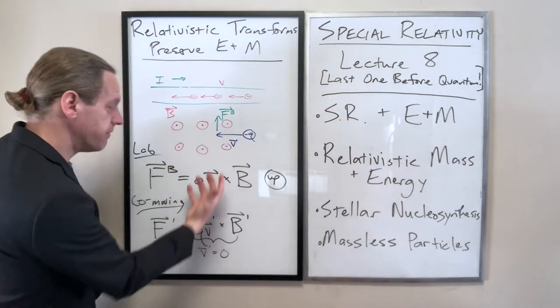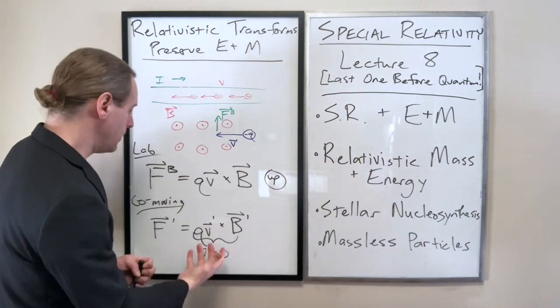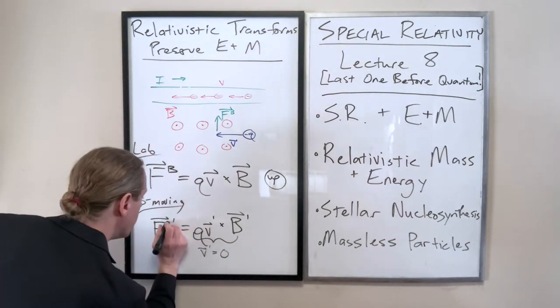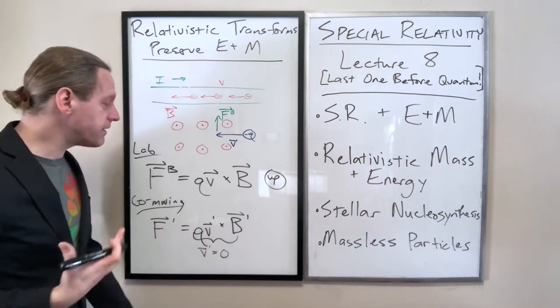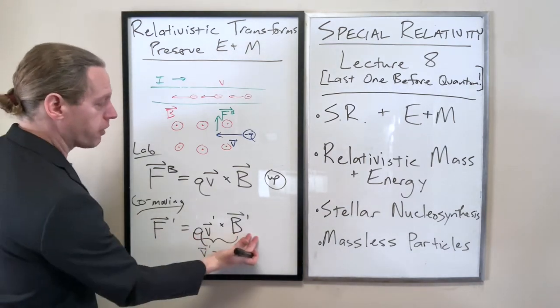So in that co-moving frame, we can write the force prime equals Q. We're assuming, by the way, the charge will be the same. Q is still Q in either frame. But QV prime crossed with B prime. And we know now that this has to be zero because V prime is zero. That's the velocity as viewed sitting next to the charge or moving along with the charge.